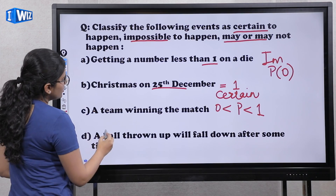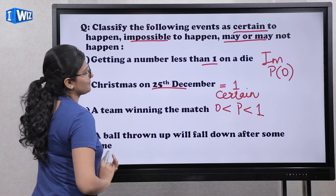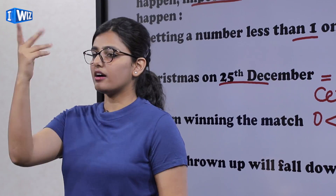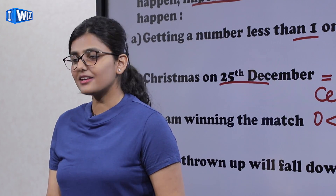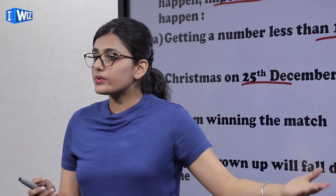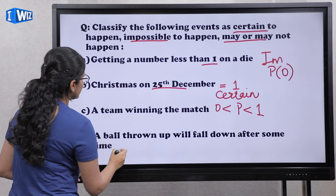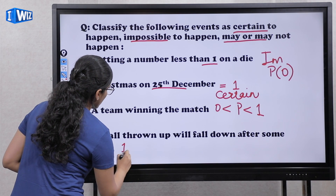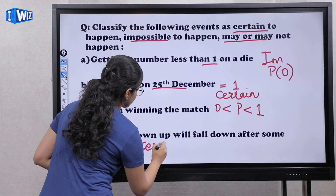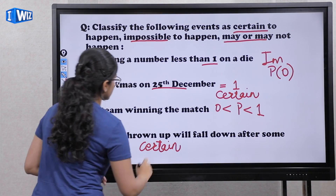The next is: a ball thrown up will fall down after some time. If you toss a ball in the air, it will come down because of gravity — this will always happen. So this probability will be 1. It is a certain event.